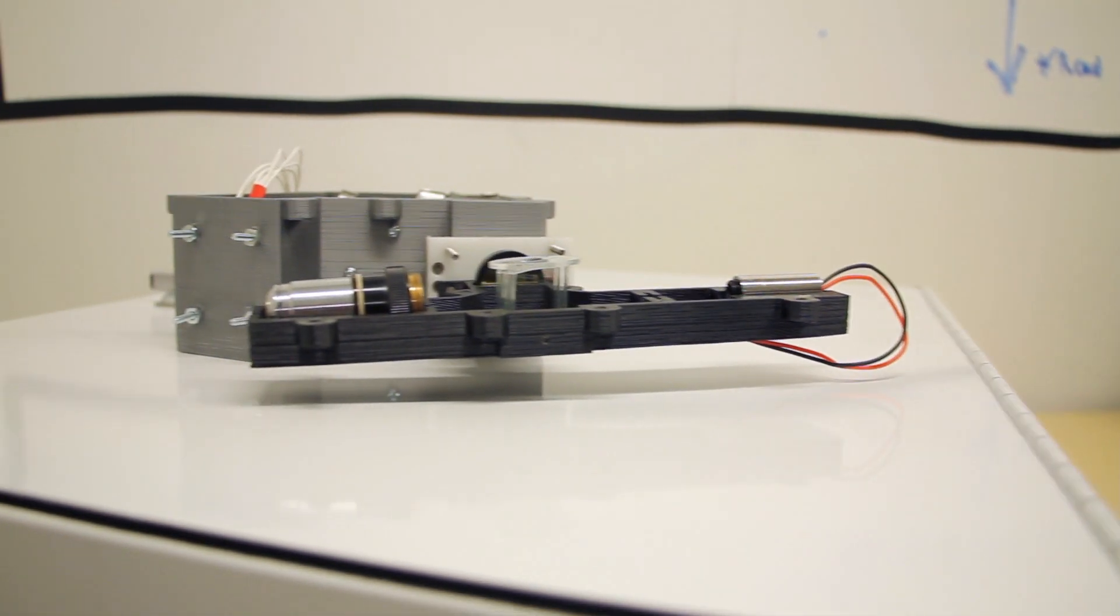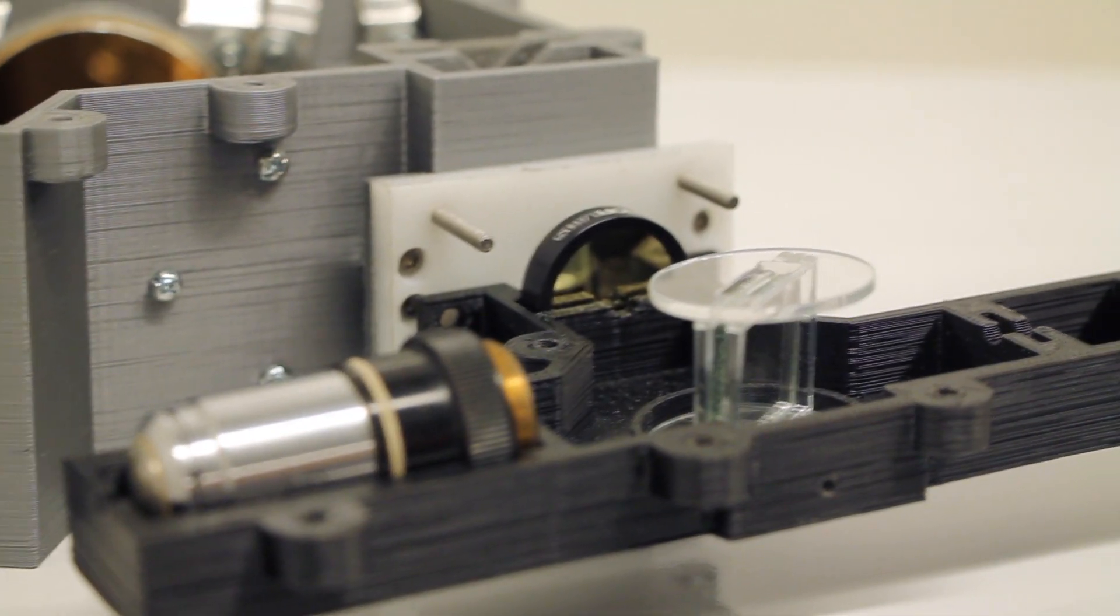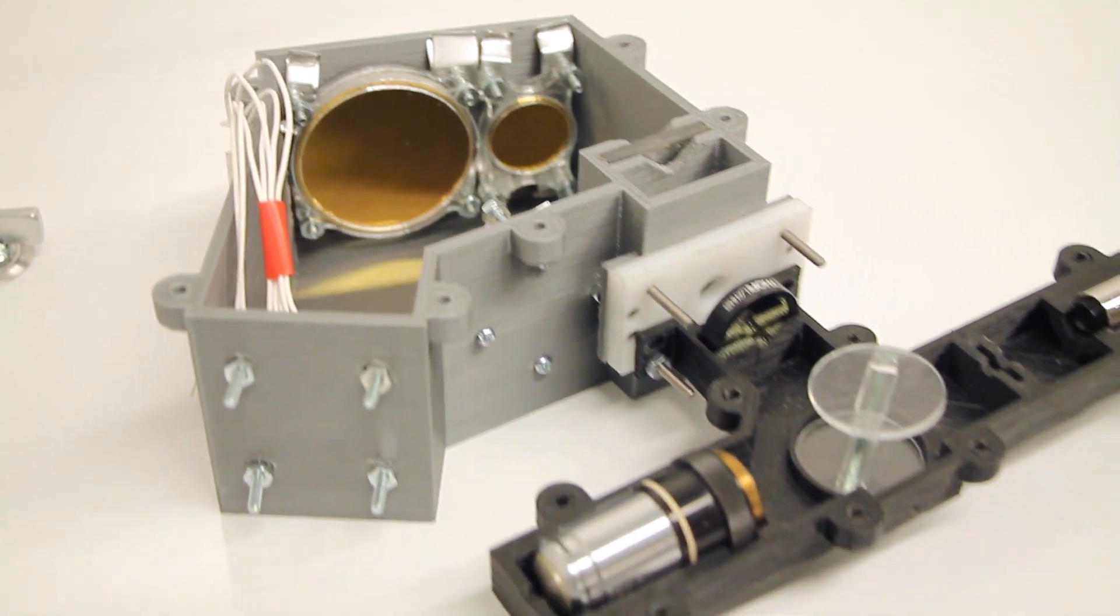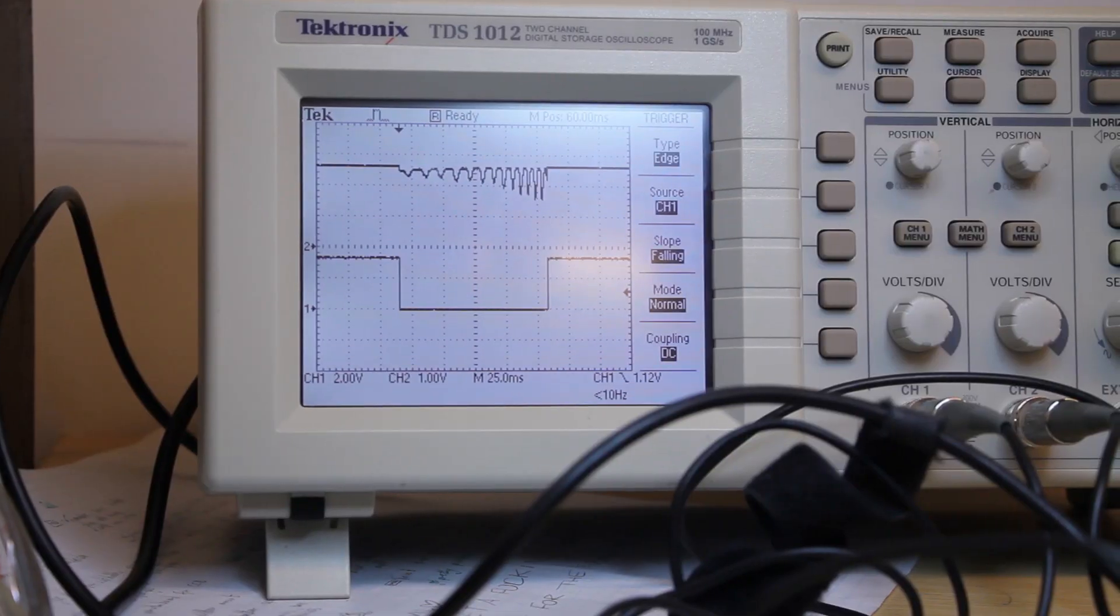Finally, the rover conducts Raman spectroscopy. Our spectrometer has a modular design with a 3D printed case. The optics are based on a Czerny-Turner design and we use a 785 nanometer laser.